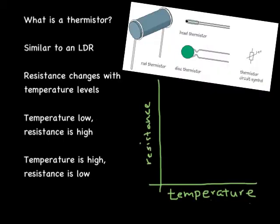So that leads us to what is a thermistor. Well it's very similar to an LDR. Its resistance changes but this time it changes with temperature levels. When the temperature is low the resistance is high, and when the temperature is high the resistance becomes low. And it follows a similar sort of pattern to the LDR.